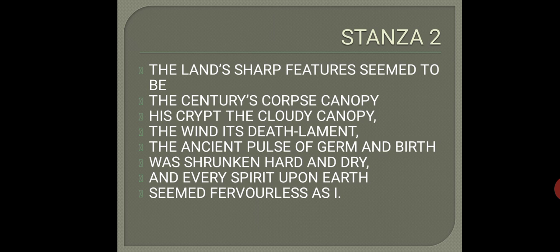The ancient pulse of germain birth was shrunken hard and dry. Here the poet says that the seeds of spring — that is, the life force — are not active anymore. They have become hard and dry, reduced from a bigger size. The natural process of conception and birth has slowed down due to extreme cold, symbolic of winters, as during winters everything gets frozen, so the force of life has also shrunken.